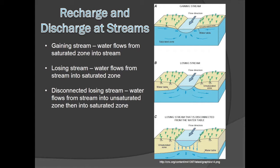Streams are not always discharge zones. Sometimes water flows from the stream back into the groundwater, depending on the elevation of the water table with respect to the elevation of the stream. If the water table elevation is higher than the surface of the stream, it will be a gaining stream, which means the water flows from the saturated zone into the stream. Conversely, if the water table elevation is lower than the surface of the stream, it will be a losing stream, because water will flow from the stream into the saturated zone. Finally, if the stream is disconnected from the saturated zone, it is called a disconnected losing stream, because water is still flowing out of the stream and into a saturated zone, but it must travel through the unsaturated zone first.